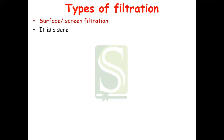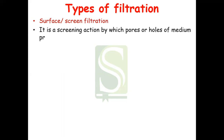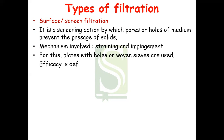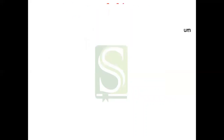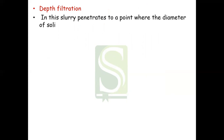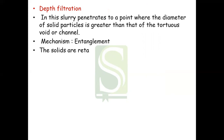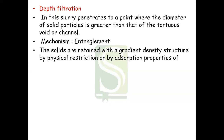There are basically two types of filtration. The first is surface or screen filtration — a screening action by which pores or holes of the medium prevent the passage of solids. The mechanism involved is straining and impingement, and plates with holes or woven sieves are used. Efficiency is defined in terms of mean or maximum pore size. The second is depth filtration — here the slurry penetrates to a point where the diameter of the solid particle is greater than that of the tortuous void or channel. The mechanism predominantly acting is entanglement, and solids are retained by physical restriction or absorption properties of the medium.